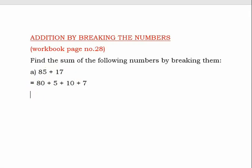Now the next step is to group the tens together and the ones together. That is 80 plus 10, and the remaining ones: 5 plus 7. Now we can add: 80 plus 10 — what is 80 plus 10?